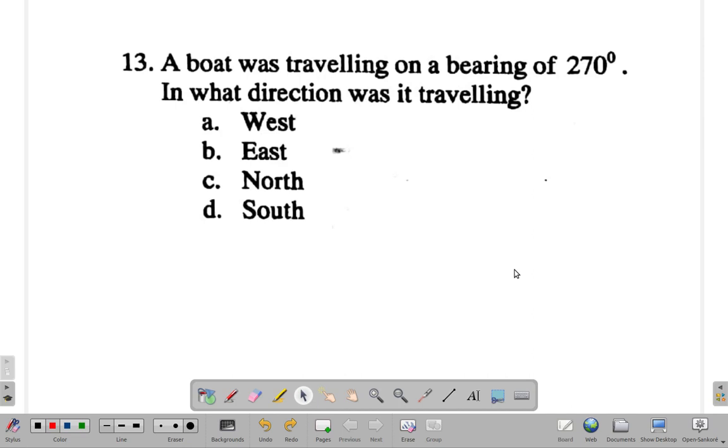So here, the boat is traveling on a bearing of 270 degrees. Now in which direction was it traveling? Let's see what's happening.